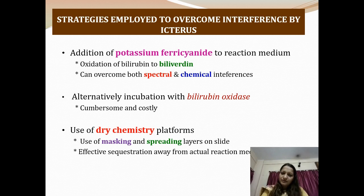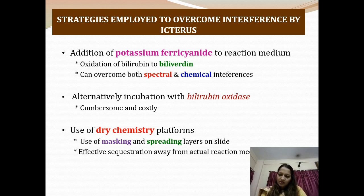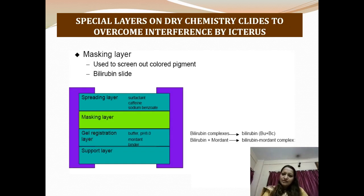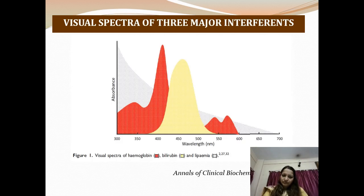Strategies to overcome interference by icterus include: addition of potassium ferricyanide to the reaction medium, which as an oxidizing agent oxidizes bilirubin to biliverdin, overcoming both spectral and chemical interference. Alternatively, the sample can be incubated with bilirubin oxidase, which achieves the same purpose but is cumbersome and costly. Use of dry chemistry platforms with a masking and spreading layer sequesters bilirubin away from the actual reaction medium — a very good alternative. Special layers on dry chemistry slides overcome the interference by icterus. A visual spectrum chart shows the absorption profiles of the three major interferents: hemoglobin, chylomicrons, and bilirubin.